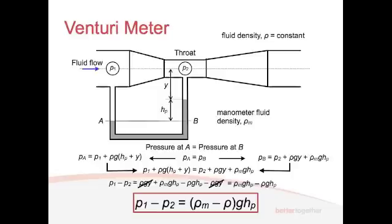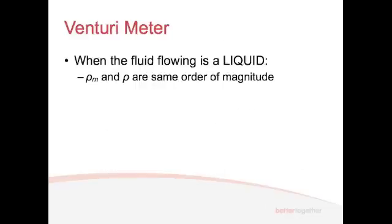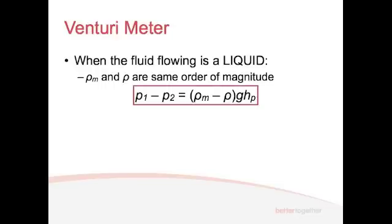So that's fine. When the fluid flowing through the pipe is a liquid, we know that rho M and rho, so the manometer density, the manometer fluid density, and the fluid that we're measuring density, they're of the same magnitude. So, for example, water is 1,000 kilograms per meter cubed, and mercury is 13,600. So, they're of the same sort of order of magnitude. So, we need to include them both in the equation, and so we end up with this equation, which you've just seen.